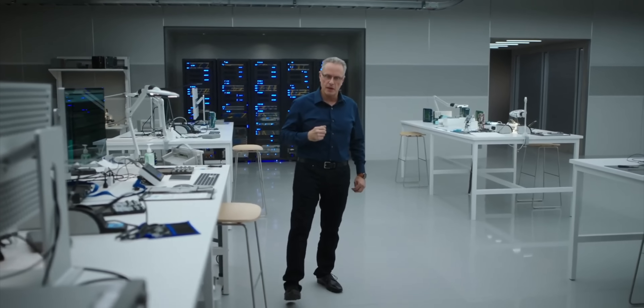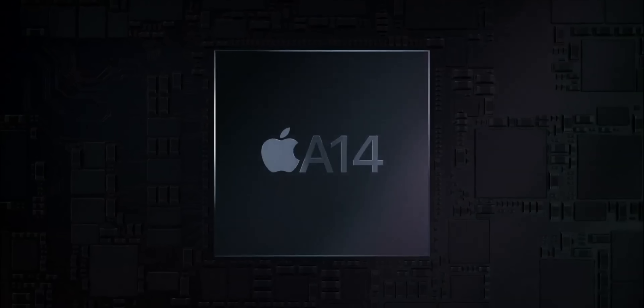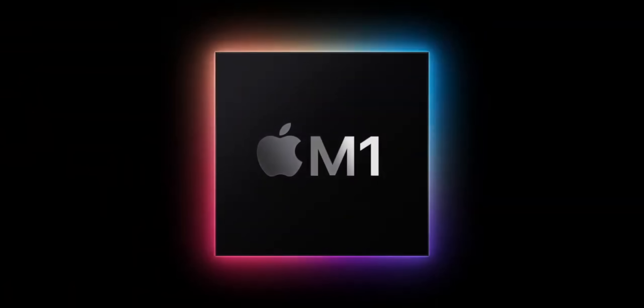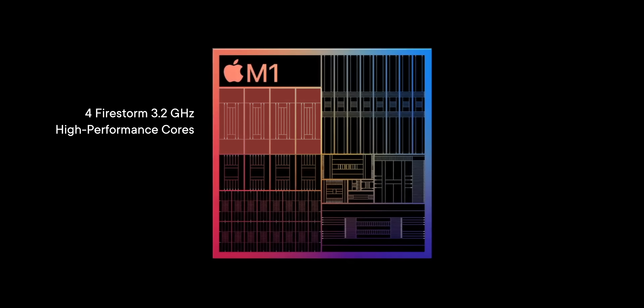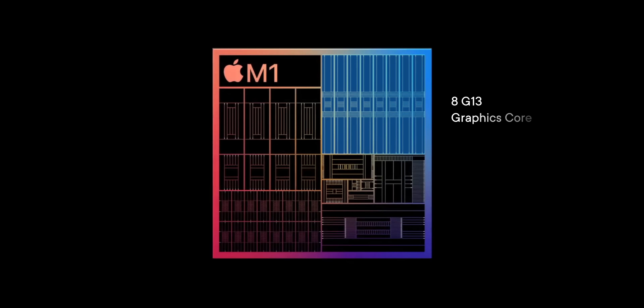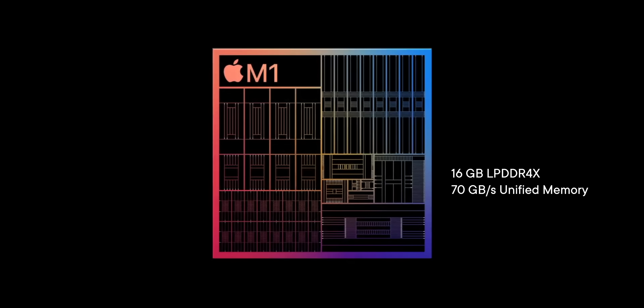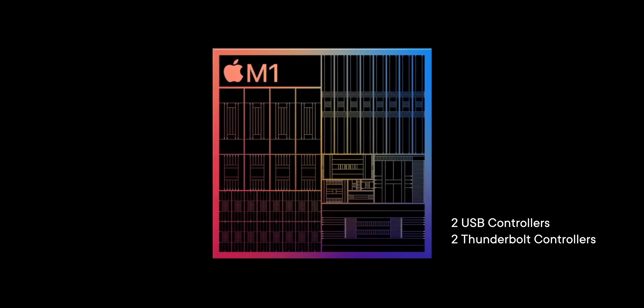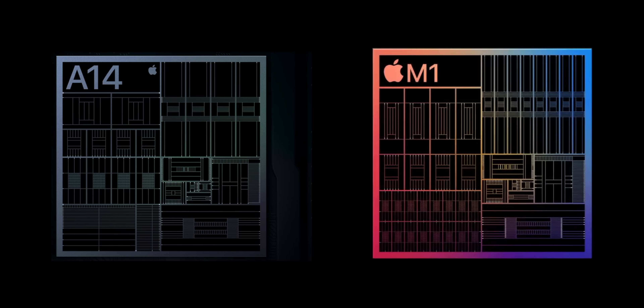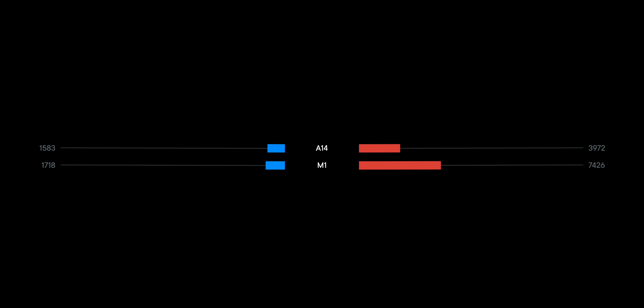M1 is the first SOC for the Mac. One way to scale a chipset architecture is by escalating the number of cores — that's what Intel has done for years with Core i5 vs i7 vs i9, and Apple with A12, A12X, and A12Z. With A14, instead of making an A14X, Apple chose to make M1 instead. M1 has four Firestorm P cores at up to 3.2 GHz, four Ice Storm E cores at up to 2 GHz, up to eight G13 GPU cores, up to 16 GB of unified memory at 70 GB/s, and two USB and two Thunderbolt controllers — the exact same cores as A14, just two more performance cores and up to four more GPU cores, tuned a little faster, resulting in up to 1718 single-core and 7426 multi-core.